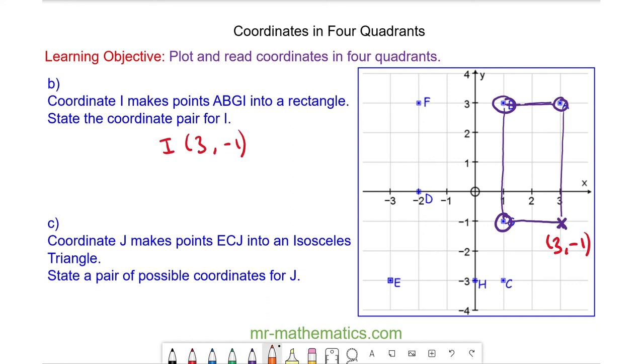So here we have the line E, C. To make the line E, C into an isosceles triangle, you can choose any of these points. So any of these coordinates could be your final answer.